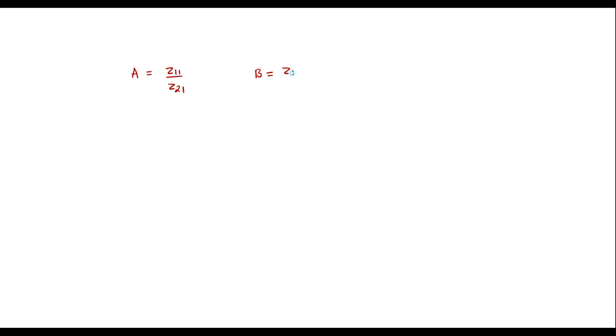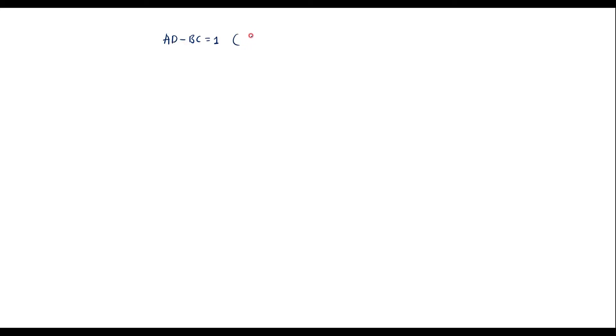The consolidated results are: A equals Z11/Z21, B equals (Z11·Z22 minus Z12·Z21)/Z21, C equals 1/Z21, and D equals Z22/Z21. Now we need to show that AD minus BC equals 1, which is the condition for reciprocity in ABCD or transmission parameters.